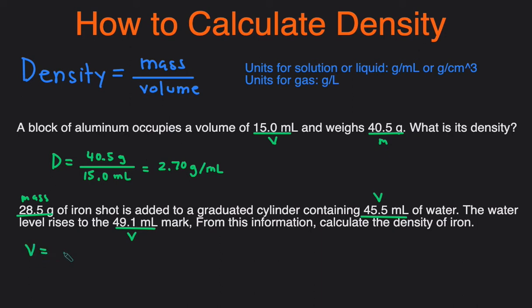So the volume of the iron is the difference: 49.1 minus 45.5, which gives you 3.6 milliliters. Now that we have the volume and the mass, we can plug it into the density equation. Density equals 28.5 grams divided by 3.6 milliliters, which comes out to 7.9 grams per milliliter.